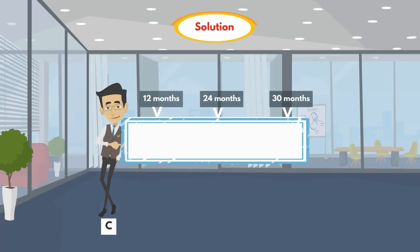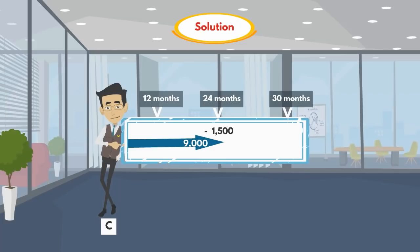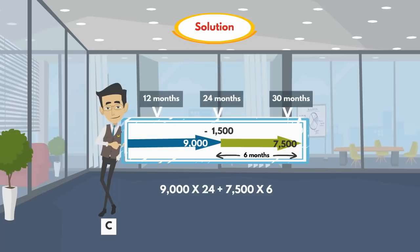C invested 9,000 at the start and after two years he made a withdrawal of 1,500. So C's investment is 9,000 for 24 months and 7,500 for 6 months. We represent this as 9,000 × 24 + 7,500 × 6.